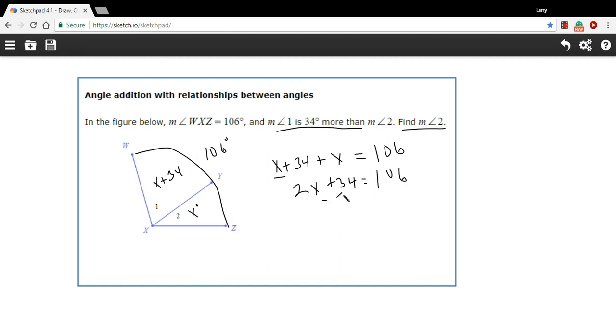Let's see, we'll subtract 34 from both sides. And I think that leaves us with 72 over here, and a 2X over here.